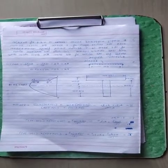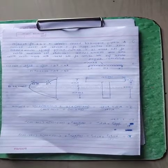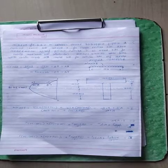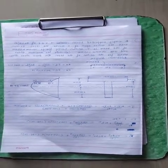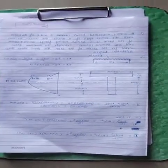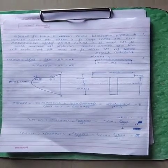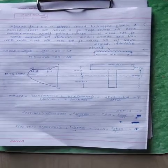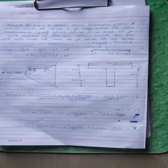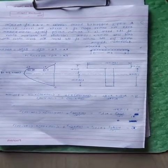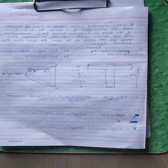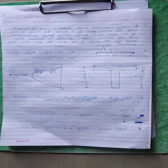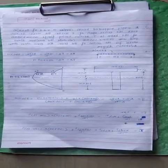Welcome friends, today we are going to see problems on beams with unsymmetric sections like T section, L section, and I section. We already seen problems based on symmetric sections, that is shear stress distribution diagrams. Today we are going to see unsymmetric sections. The problem is: a simply supported beam carries a UDL of 80 kilonewton per meter over the entire span of 6 meters. The cross section is a T section having flange 150 mm x 50 mm and web 50 mm x 150 mm. Calculate the maximum shear stress and draw the shear stress distribution diagram.